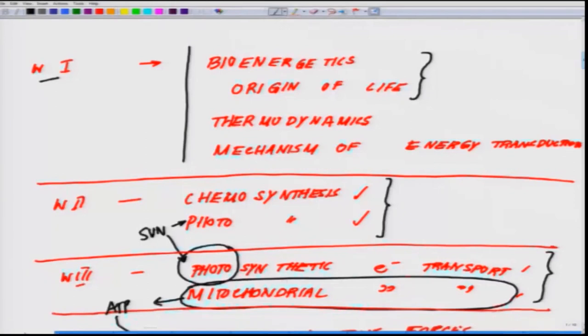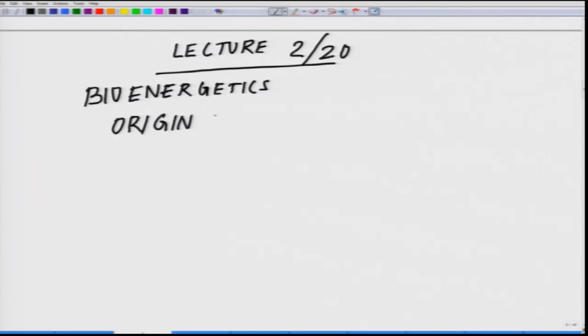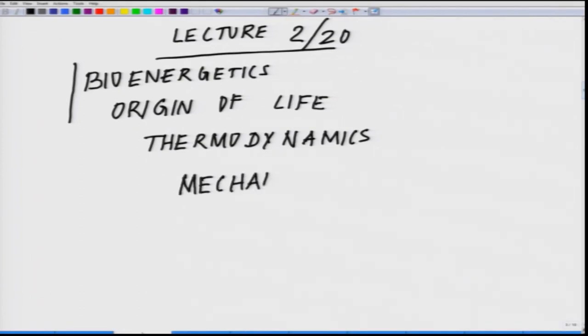So to start off, today is our second class. Bioenergetics and the origin of life—this is where we are starting. We are into lecture 2 of 20: bioenergetics and origin of life. And then next we'll be following thermodynamics. It's the fourth point we'll be dealing with—the mechanism of energy transduction.